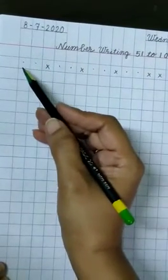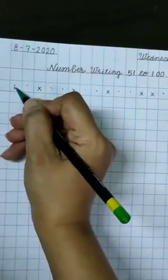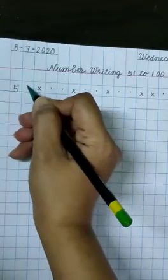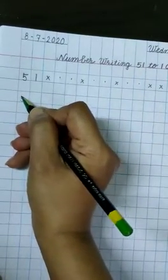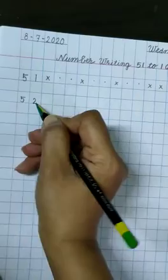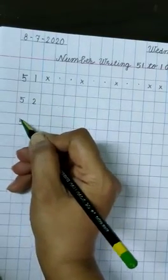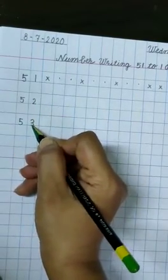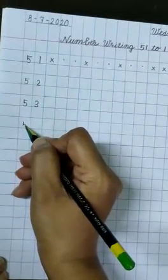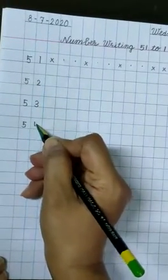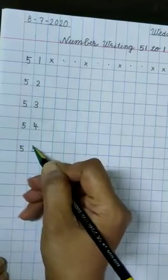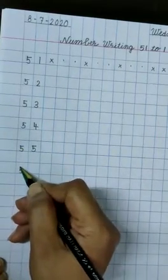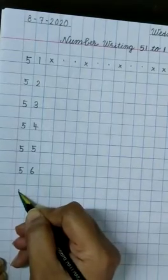Now students, leave above boxes and start writing near the margin line. Write 5-1-51, then 52, 53, 54, 55, 56, 57.